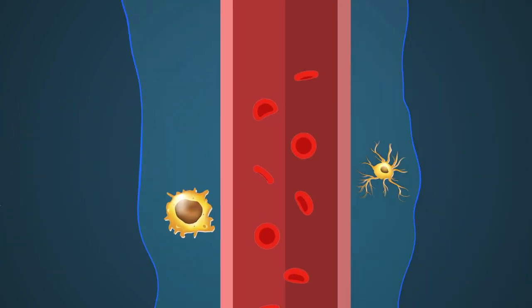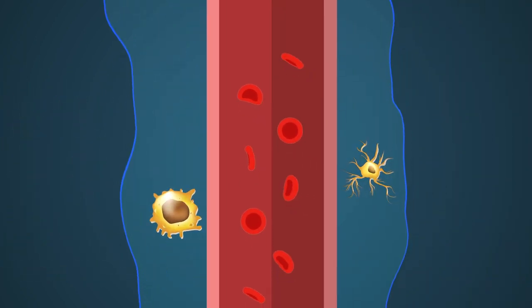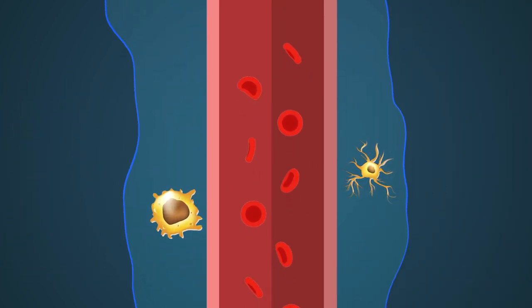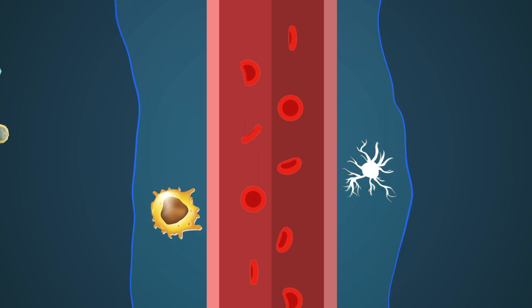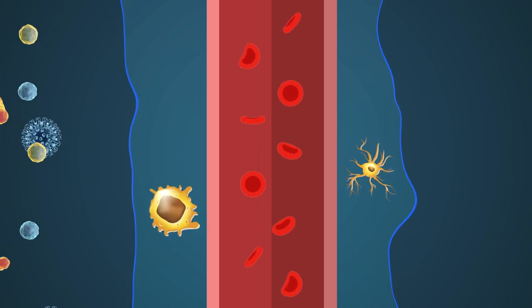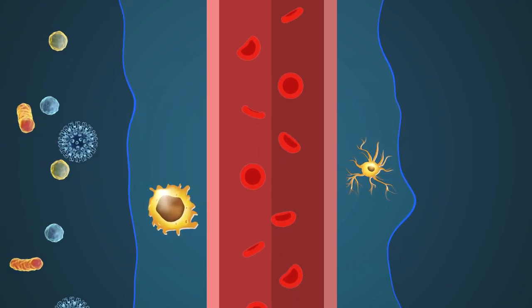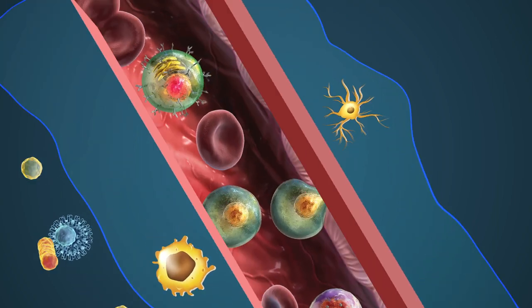Non-microglial cells in the CNS include macrophages and dendritic cells. Macrophages and dendritic cells are involved in local immune surveillance and in the phagocytosis of cellular and pathogenic debris.